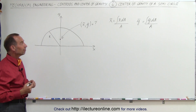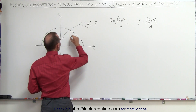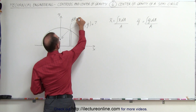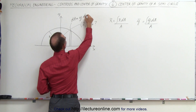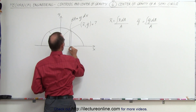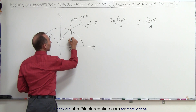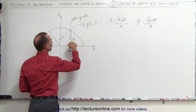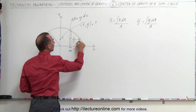Now for the y-coordinate, we'll go ahead and find that using the equation. What we need is a small area element dA. My dA is equal to the height, which would be y, times the width, which would be a small dx. So this would be dx for the width and y for the height. The center of gravity of that small little slice is right in the middle, which means that the y-coordinate of the center of gravity of that small slice is equal to the full height y divided by 2.